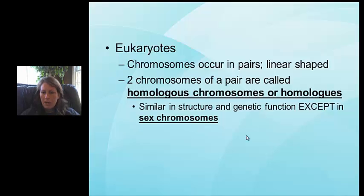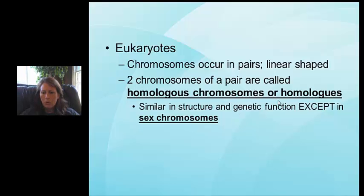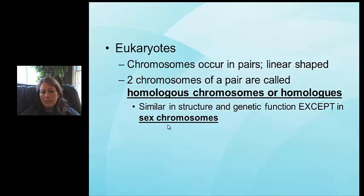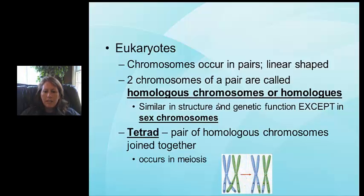Eukaryote chromosomes occur in pairs and are linear in shape. Make sure you know this: two chromosomes of a pair are called homologous chromosomes. They are similar in structure and genetic function. The exception would be sex chromosomes — in males, the pair consists of a long chromosome and a short chromosome; in females, both chromosomes are the same size. All other chromosome pairs are called autosomes. A tetrad is a pair of homologous chromosomes joined together, representing four individual chromosomes.